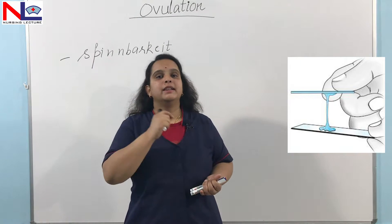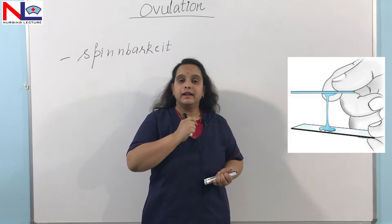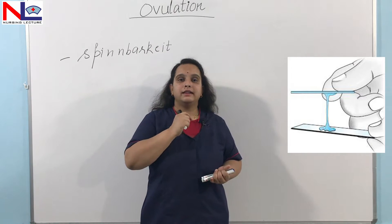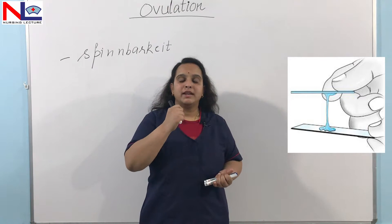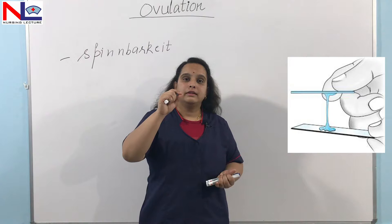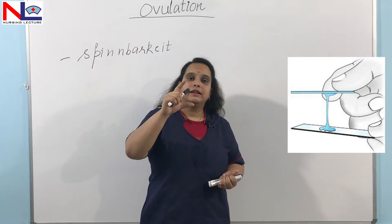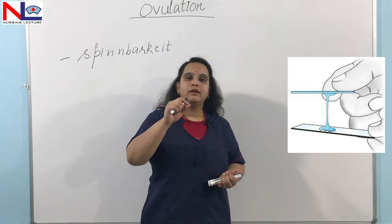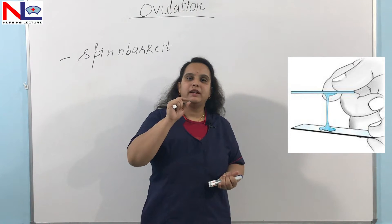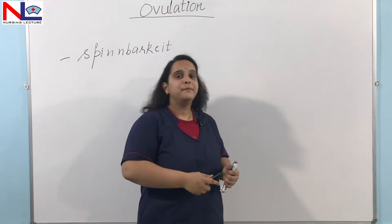This indicates the high estrogen peak at the time of ovulation, which makes the cervical secretion become more clear, thin, and stretchy. By this we can easily evaluate that the woman is ovulating, because the high estrogen peak causes the elasticity or stretchability of the mucous fibres.